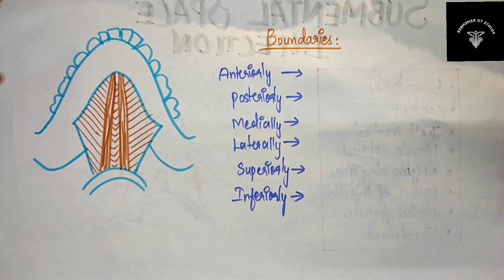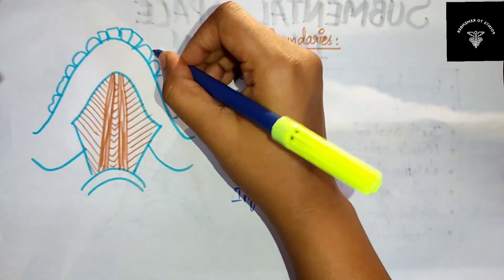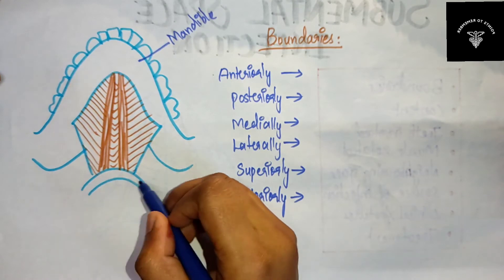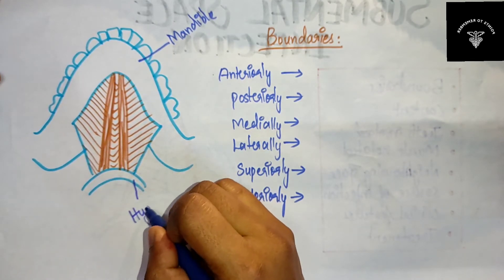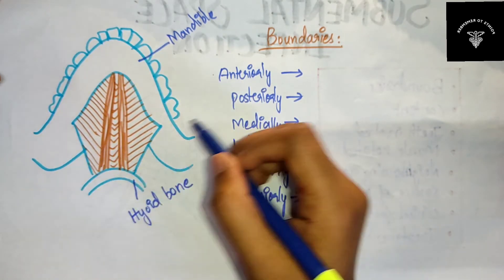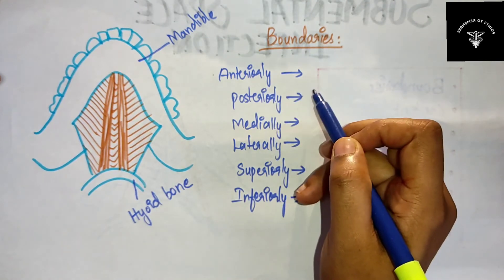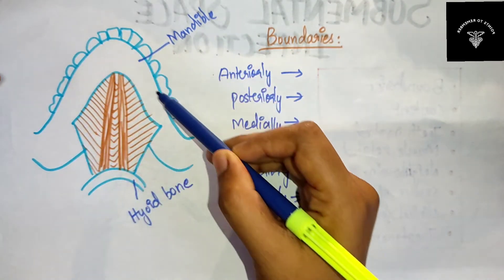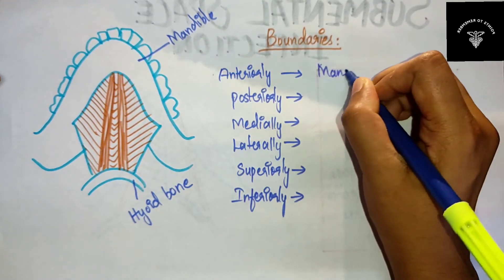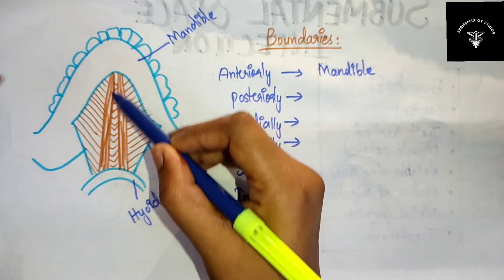Let's discuss the boundaries of the submental space. This will be your mandible, and this will be your hyoid bone. Moving on to the boundaries: anteriorly you have the mandible, and posteriorly you have the hyoid bone.